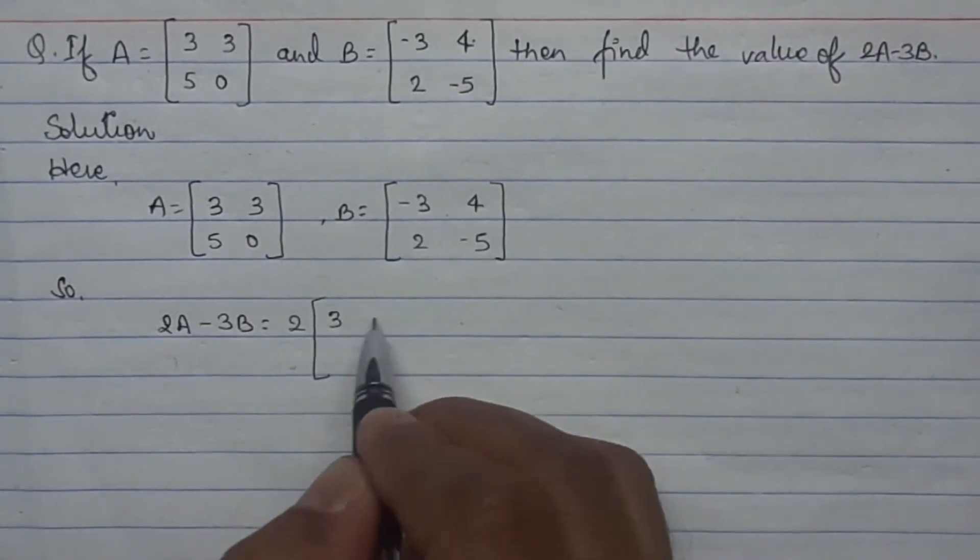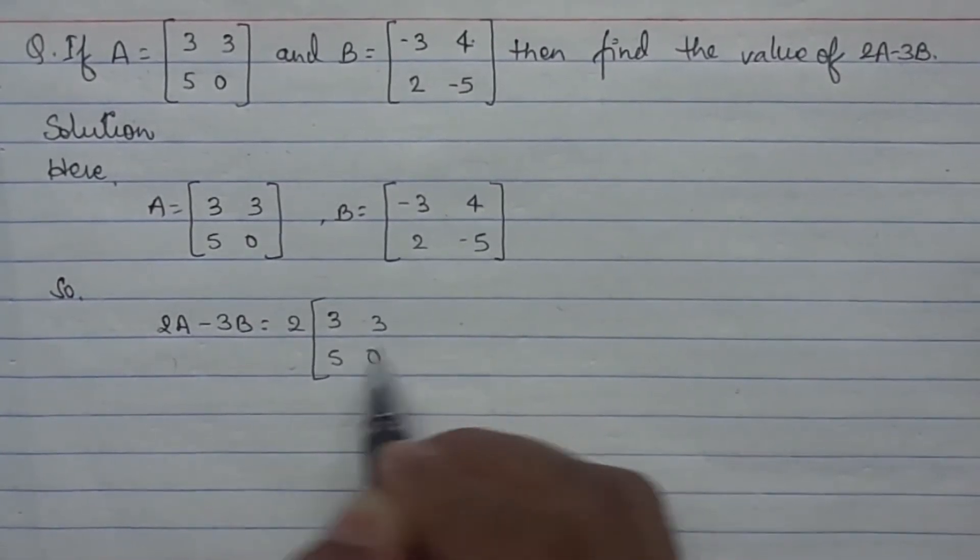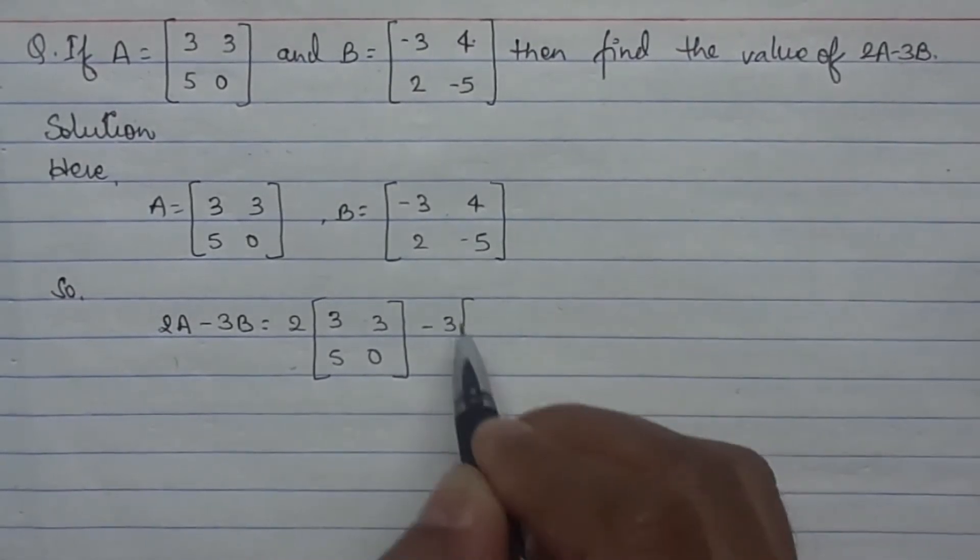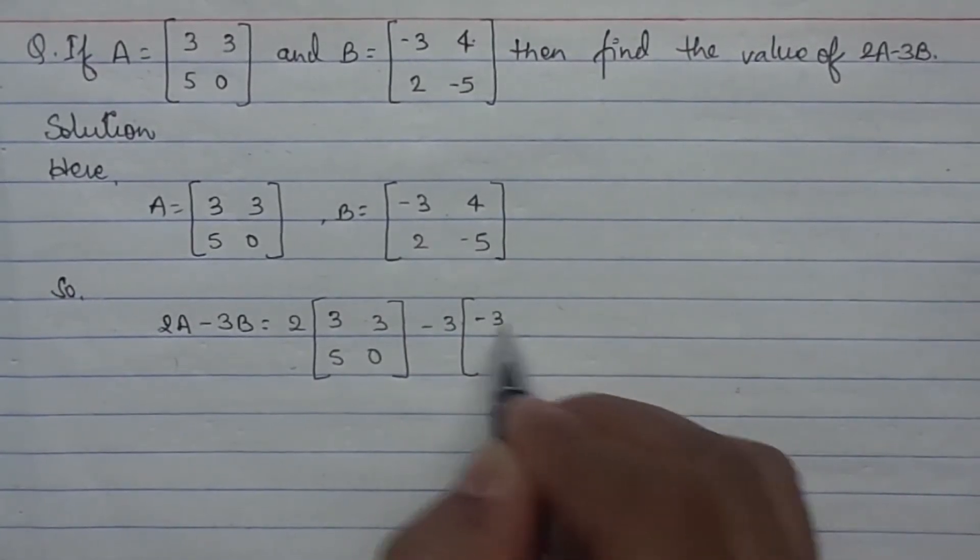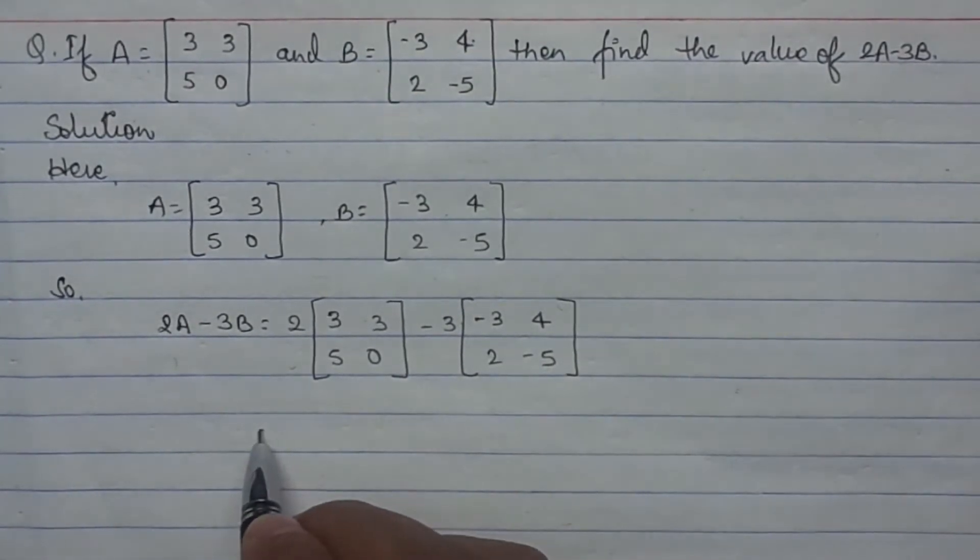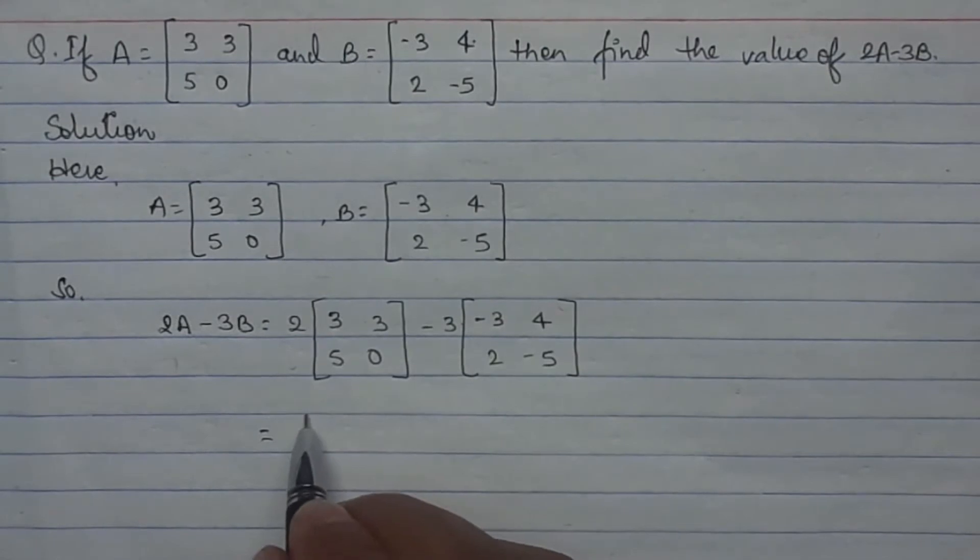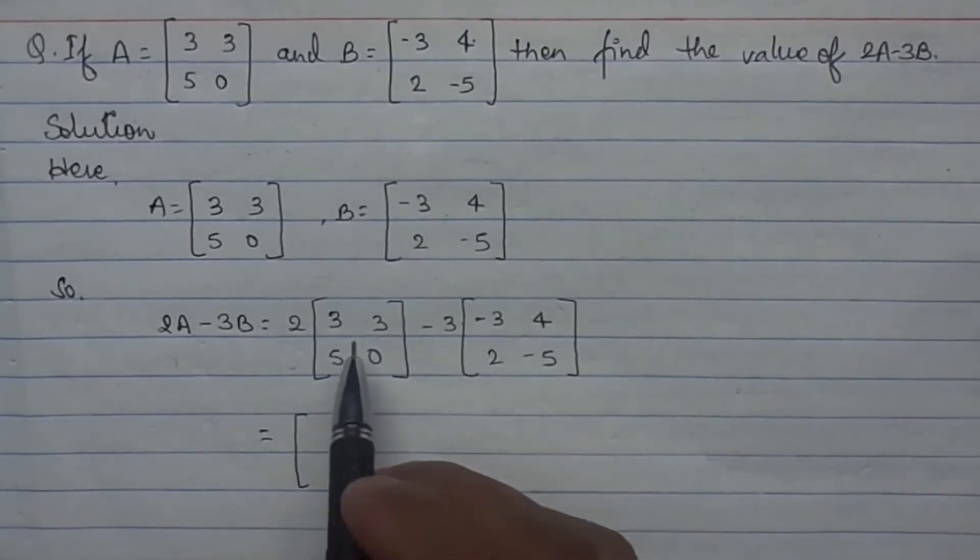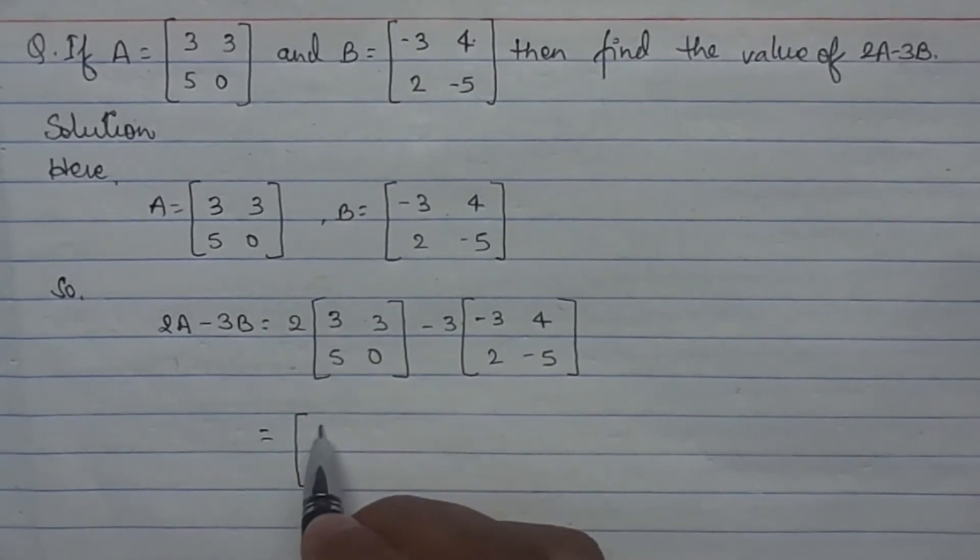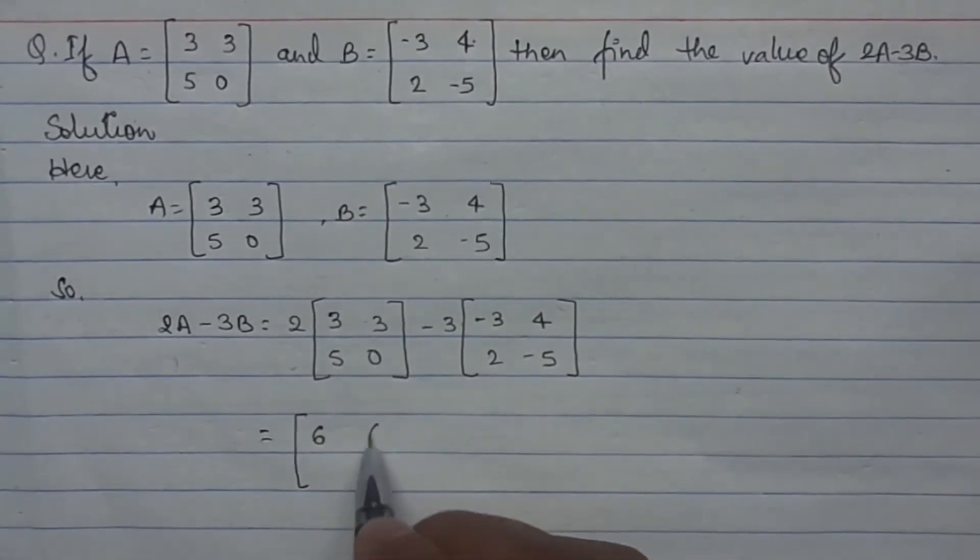2A is [3 3; 5 0] minus 3B means [-3 4; 2 -5]. After this, now we need to multiply each element of this matrix by 2. 2 into 3 is 6, 2 into 3 is 6, 2 into 5 is 10, 2 into 0 is 0.